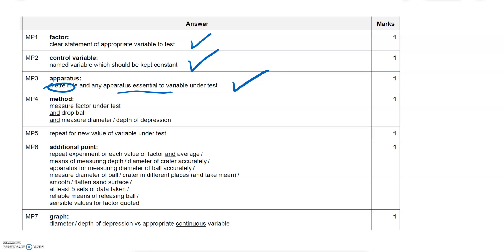We've also talked about the method idea that we drop the ball, measure the diameter of the depression so we've done that, and we've talked about repeating it for new value of the variable where the new variables were 100 grams, 200 grams, 300 grams, or you can just say repeat for different mass. In this case there's also all these additional points, so you just need to have one of them to get the mark and we've mentioned quite a few.